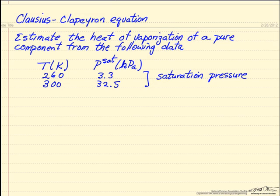Here we're going to use the Clausius-Clapeyron equation to estimate the heat of vaporization of a pure component given the following vapor pressure or saturation pressure data. We have at two temperatures, 260K and 300K, we're given the saturation pressures for these two temperatures, so the saturation pressure in kilopascals.